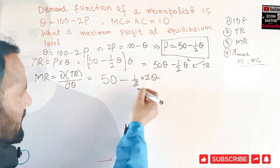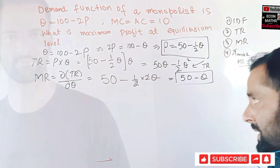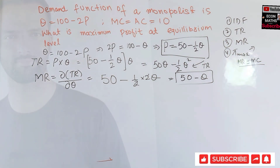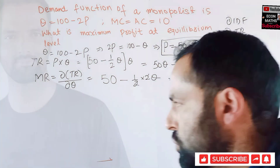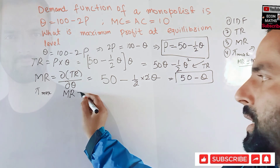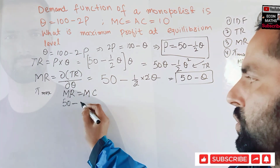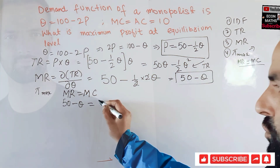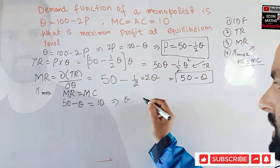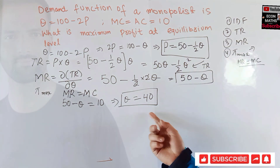This is our marginal revenue function. The profit maximizing condition requires that marginal revenue equals marginal cost. Our marginal revenue is 50 minus Q, and our marginal cost is 10. Setting them equal: 50 minus Q equals 10. Solving for Q gives us 50 minus 10 equals 40. So the profit maximizing level of output is Q equals 40.